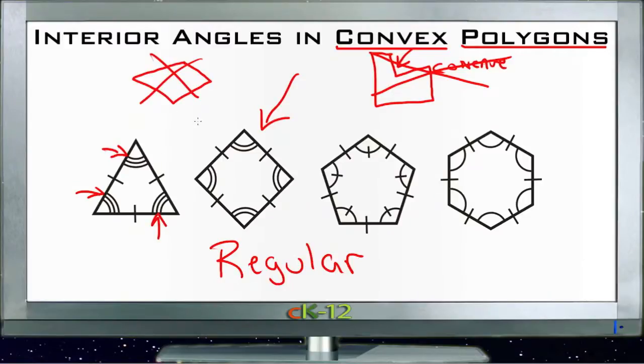Now, there's actually a formula for calculating the number of degrees in interior angles in a polygon. And it's actually simpler than you might think. The formula is n minus two times 180 degrees.